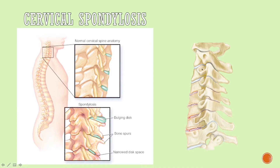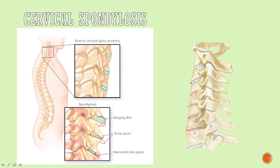Between C2 and C3 there is an intervertebral disc, and at the back we have a spinous process, with transverse processes to the lateral side. These vertebras also have a facet joint — the zygapophysial or Z joint — which is a synovial joint filled with synovial fluid. The intervertebral disc joining the two vertebral bodies is a solid fibromembranous joint.